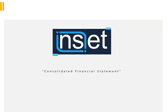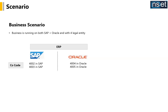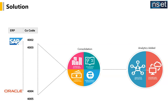Let's check how consolidation is carried out in Insight. We are showing SAP and Oracle just for reference purposes — organizations might be using any other software like NetSuite, Microsoft Dynamics, or even just an Excel file. The scenario is a group company with four company codes: 4002 and 4003 in SAP, and 4004 and 4005 in Oracle. We will connect the master data, map those fields, and bring everything together in our consolidation tool.